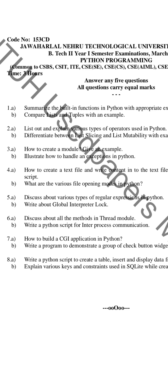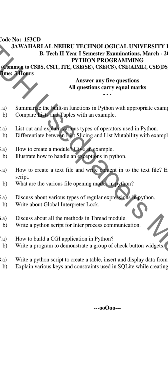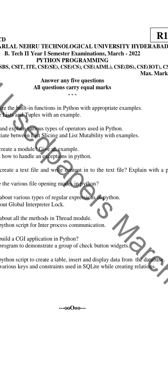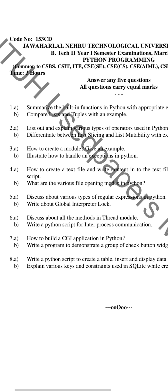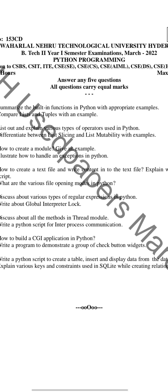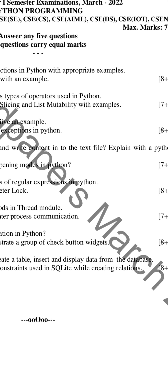The seventh question is: how to build a CGI application in Python. The next one is: write a program to demonstrate a group of check button widgets. The last question is: write a Python script to create a table, insert and display data from the database.